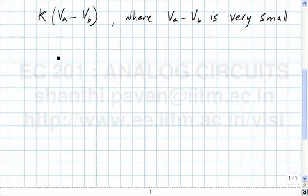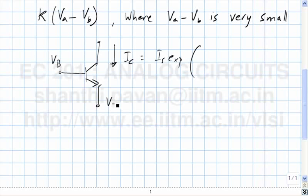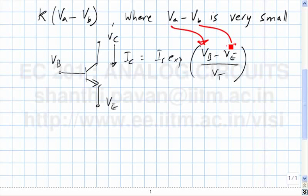One suggestion is the following: we already know that the collector current is IS times exponential of VB minus VE over VT. So why not make one input one transistor terminal and the other input the other? Any objections? We know that if we embed the op-amp in the feedback loop, VB will be approximately equal to VE, which means the difference will be very small, so the quiescent current will be extremely small. If the quiescent current is very small, GM is very small, and the gain will be small.